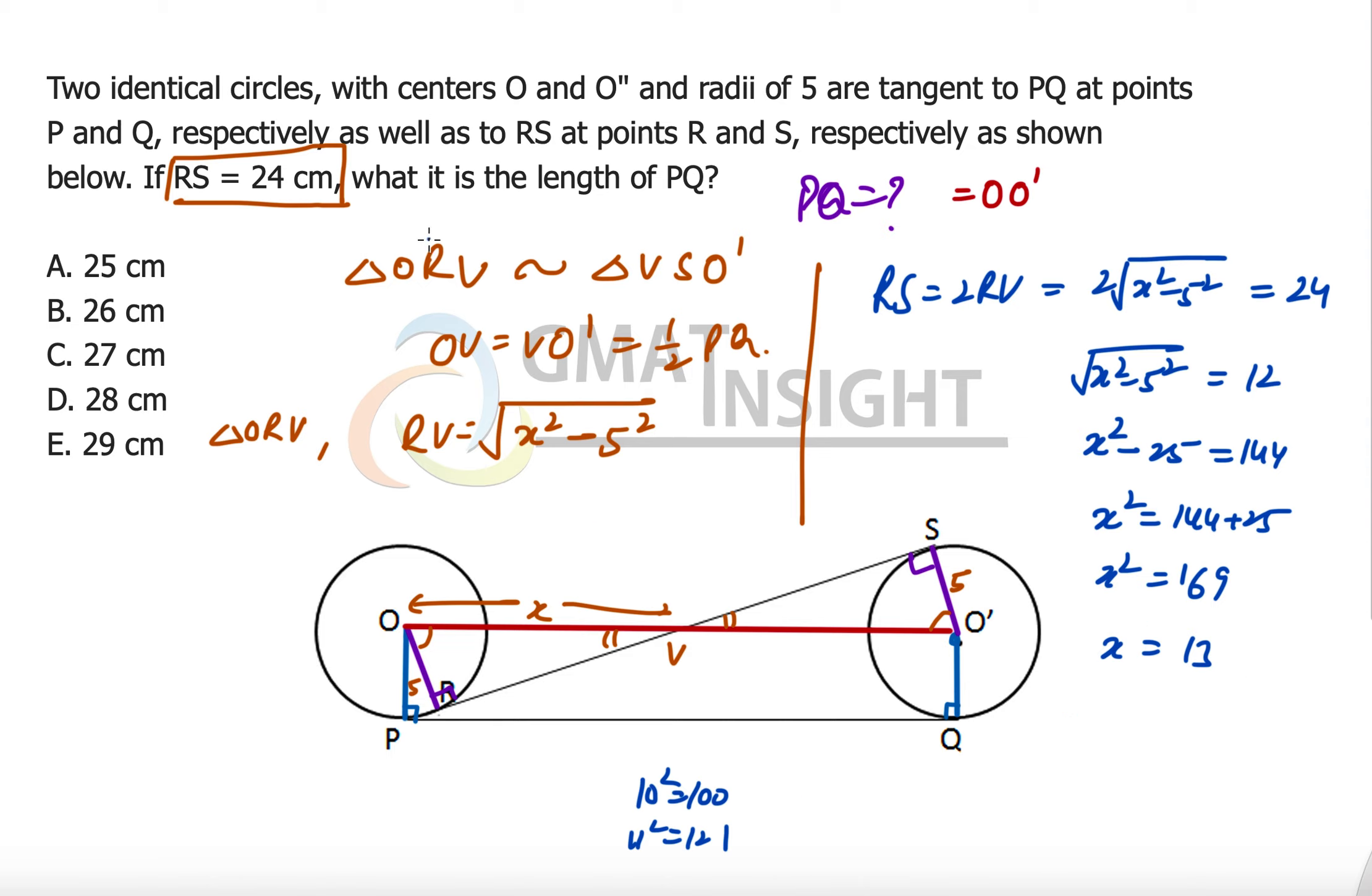Now x is OV and the one we have to calculate PQ is equal to twice of x which is equal to 26. So the answer to the question becomes option B. I hope you enjoyed the learning. Thank you so much.